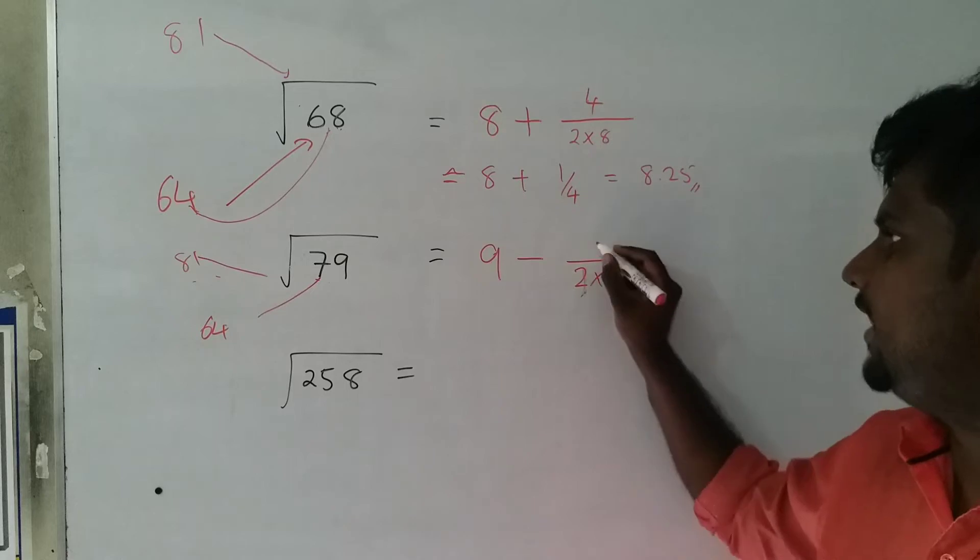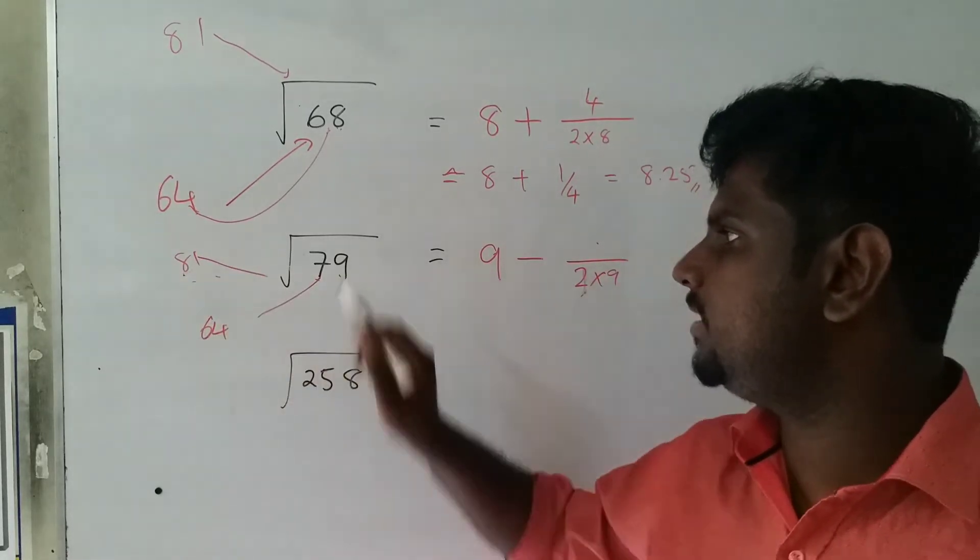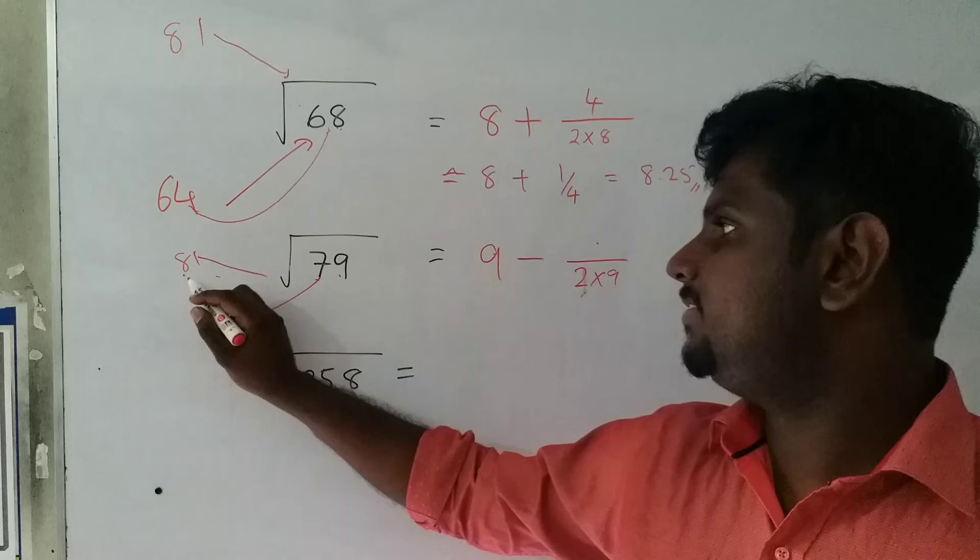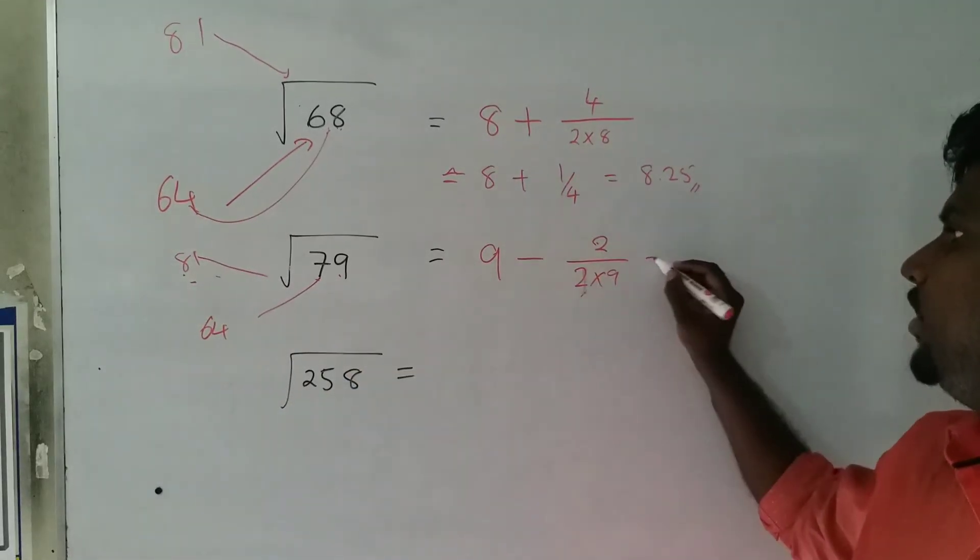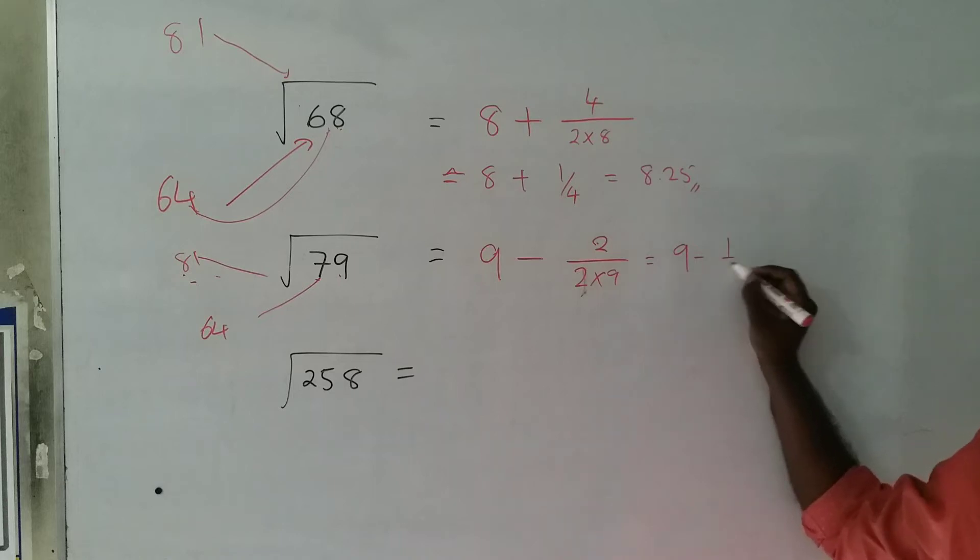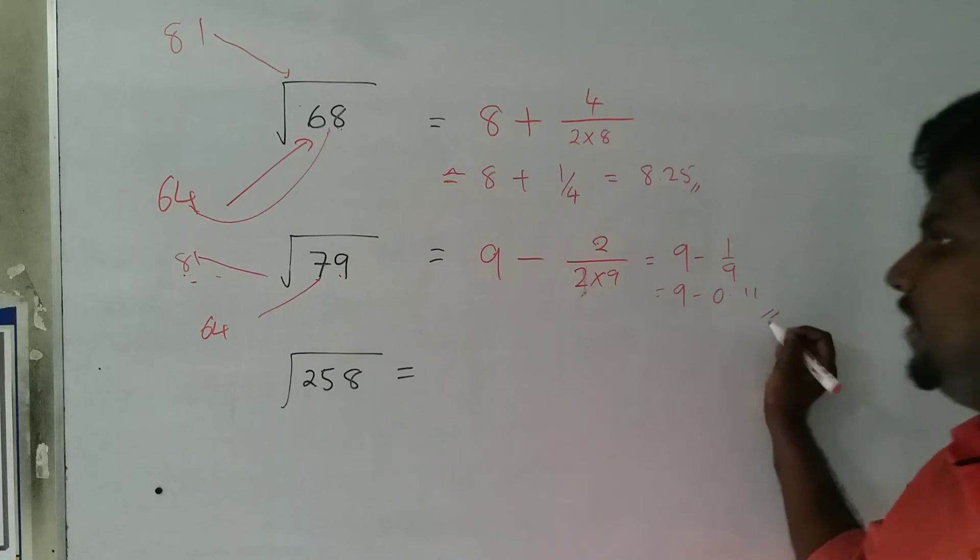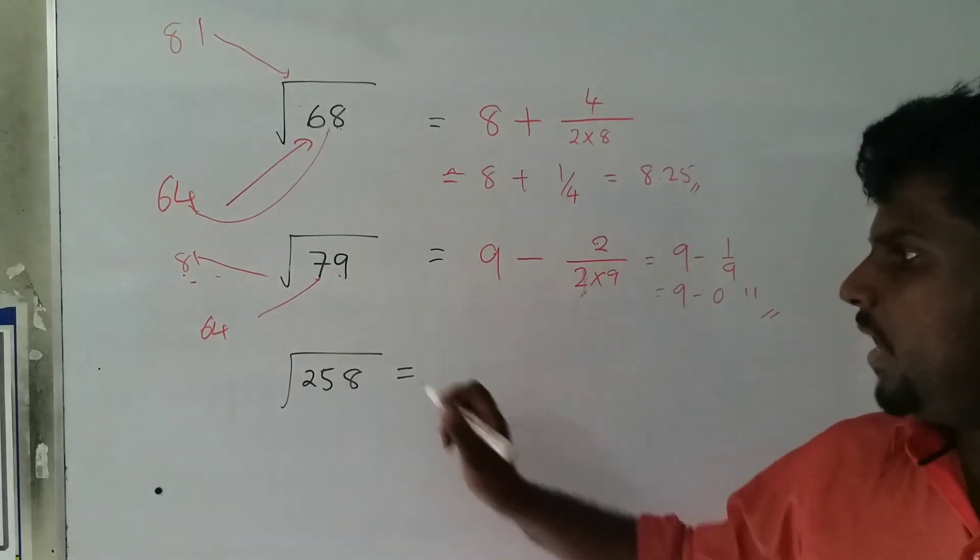So what is the difference between 81 and 79? It's 2. So it's going to be 9 minus 2 over 18, which is 9 minus 1/9. You can simplify this further to about 0.11, so it's approximately 8.89.